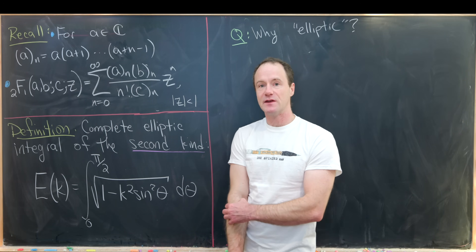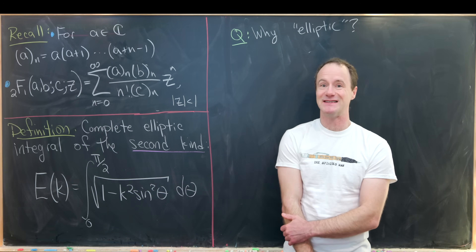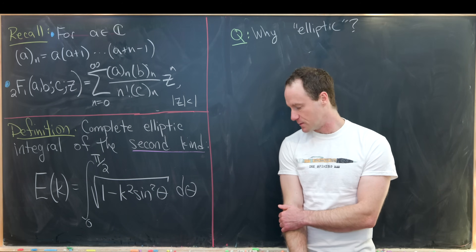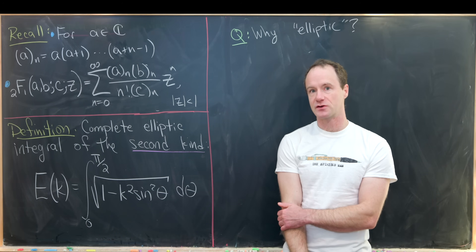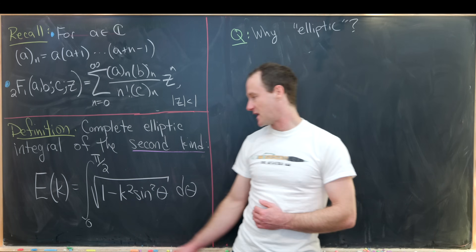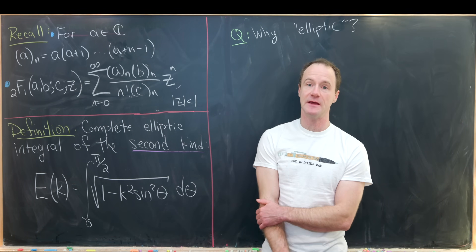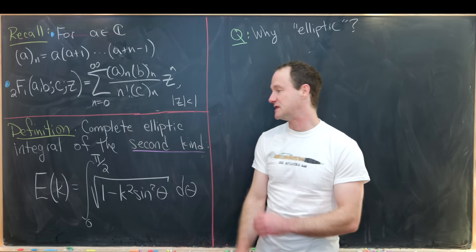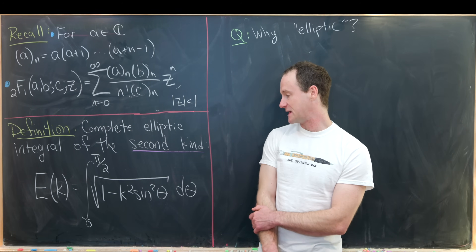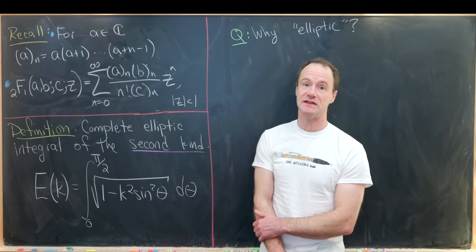The next thing we want to look at is something called the complete elliptic integral of the second kind. We looked at the complete elliptic integral of the first kind in the previous video. This one is defined as a function of k, E(k), as the integral from zero to π/2 of the square root of (1 - k² sin²θ) dθ.